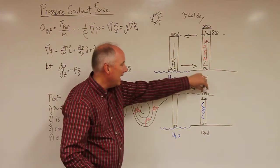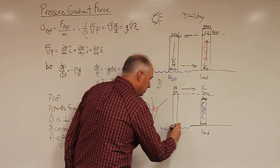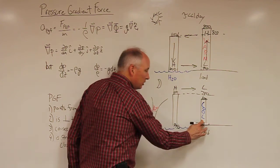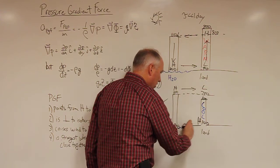Taking mass out of this column, adding it to this column, is going to reduce the surface pressure over here to say 990, and it's going to increase the surface pressure over here to 1010, which is a high and a low.